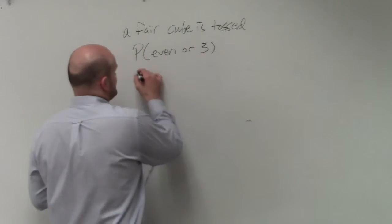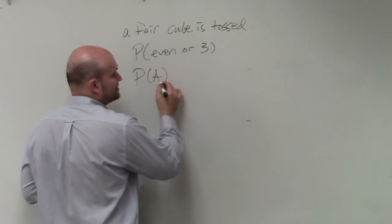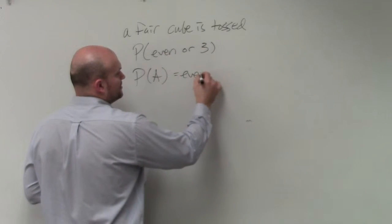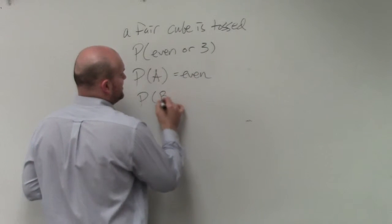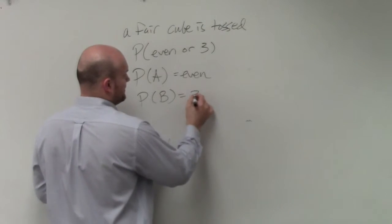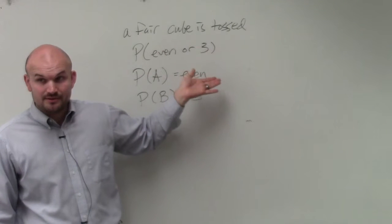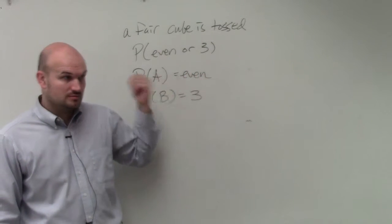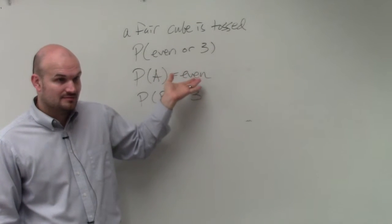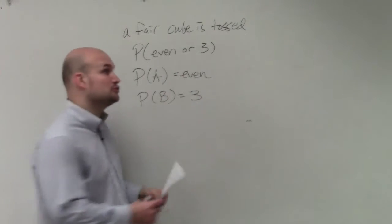Now, first of all, let's look at our two events. We have the probability of A, an even number, and the probability of B, which would be the number 3. So is it possible to roll a number and for it to be 3 and even? If you roll the number 3, is that even? No. So therefore, these would be mutually exclusive.